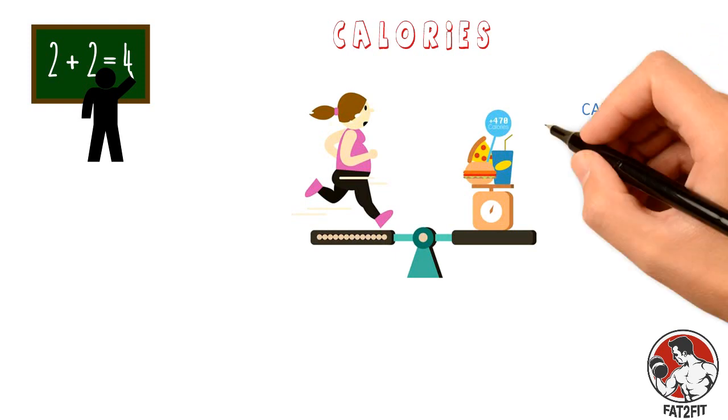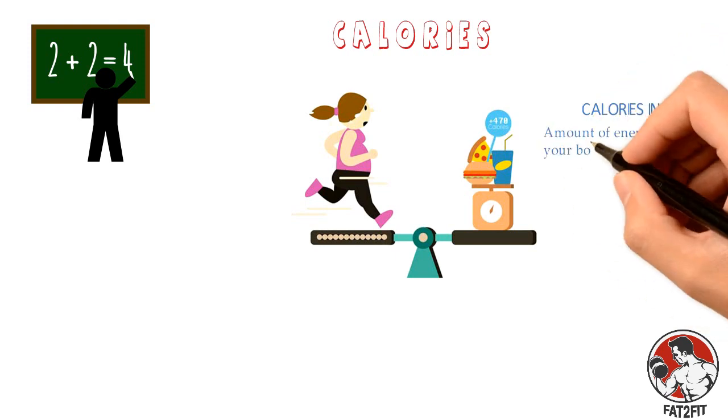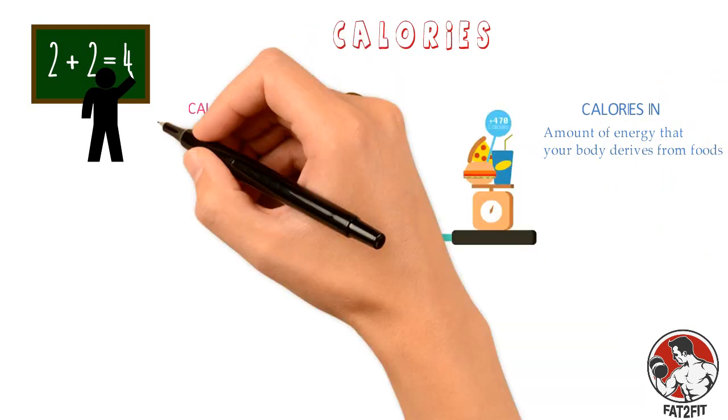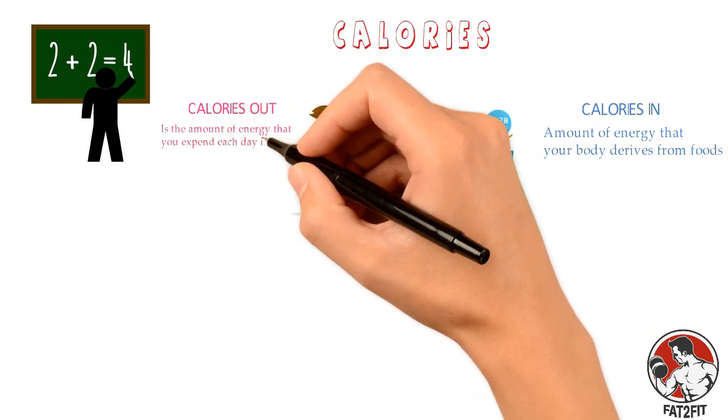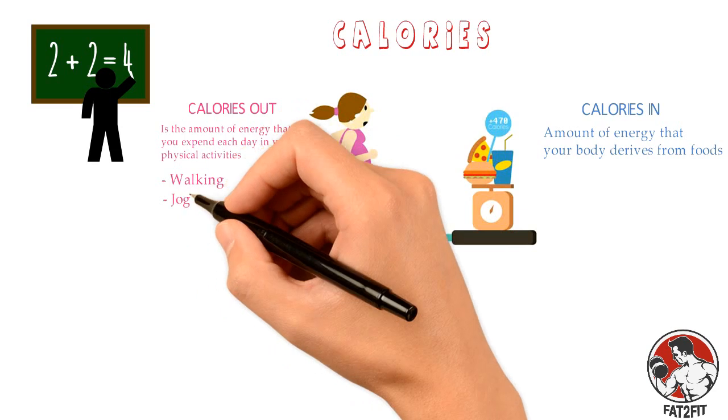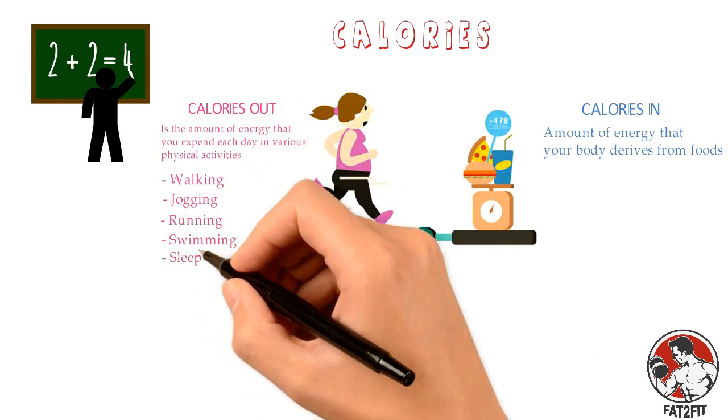First, calories in is the amount of energy your body derives from food. Second, calories out is the amount of energy you expend each day in various physical activities like walking, jogging, running, swimming, or even sleeping.